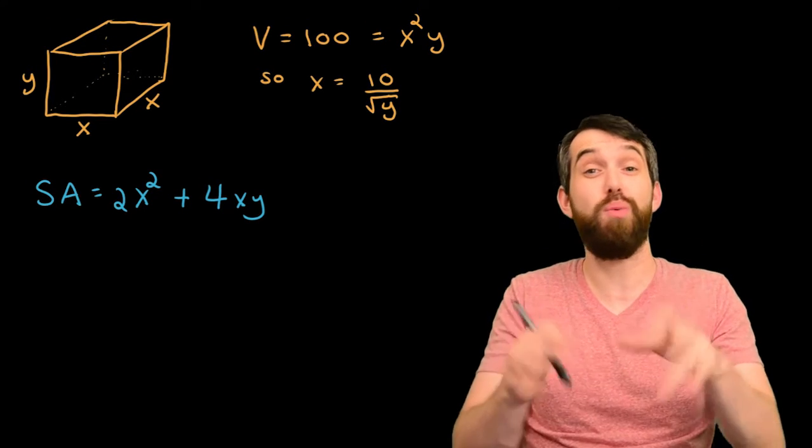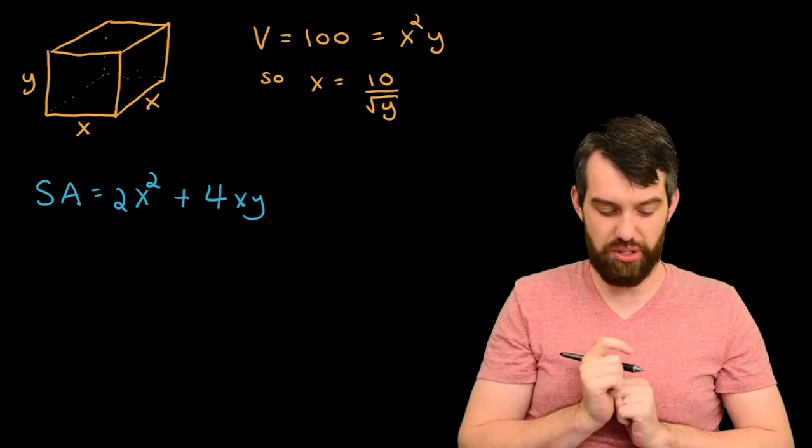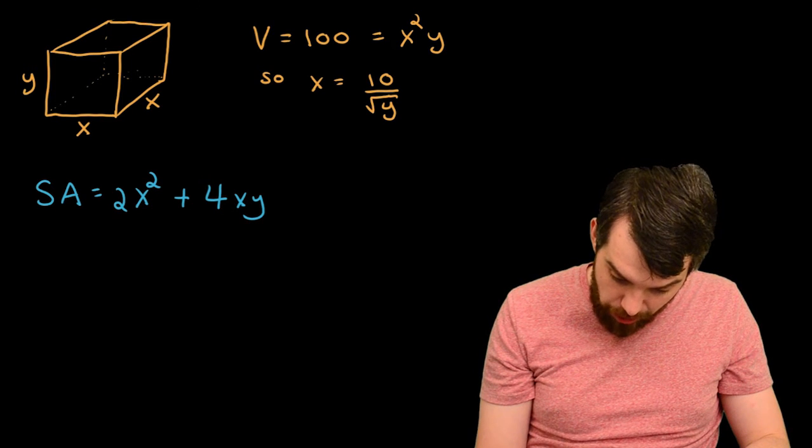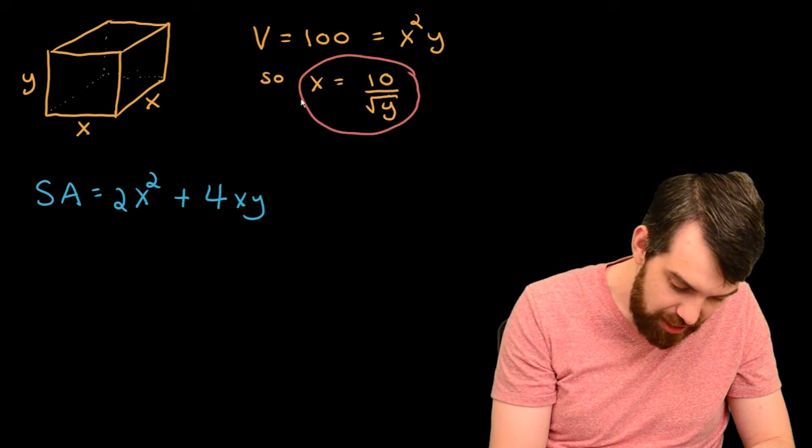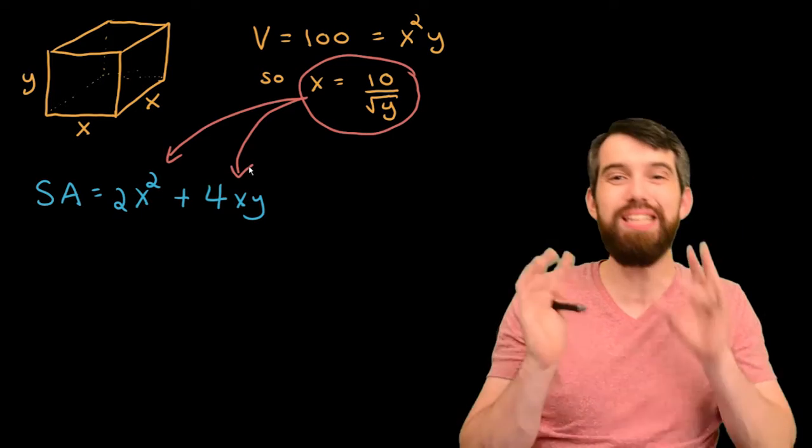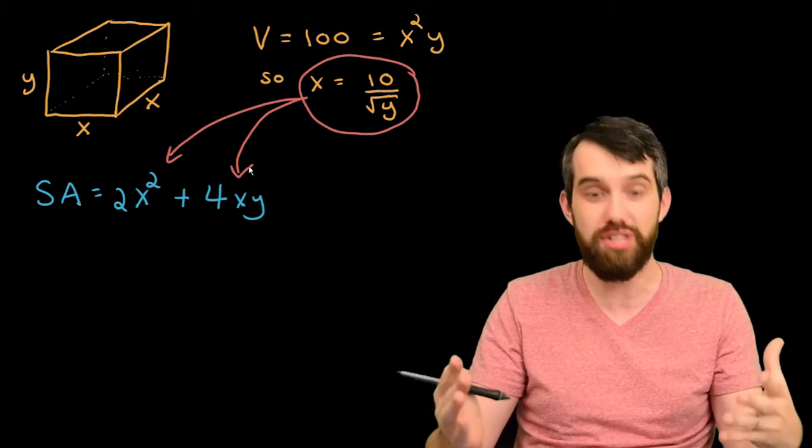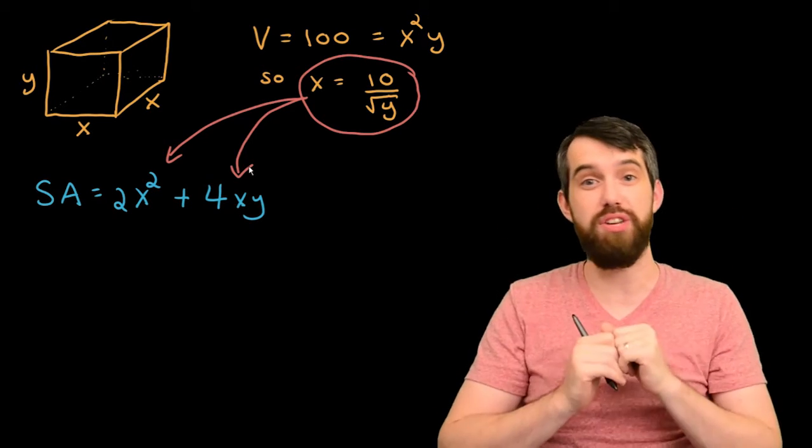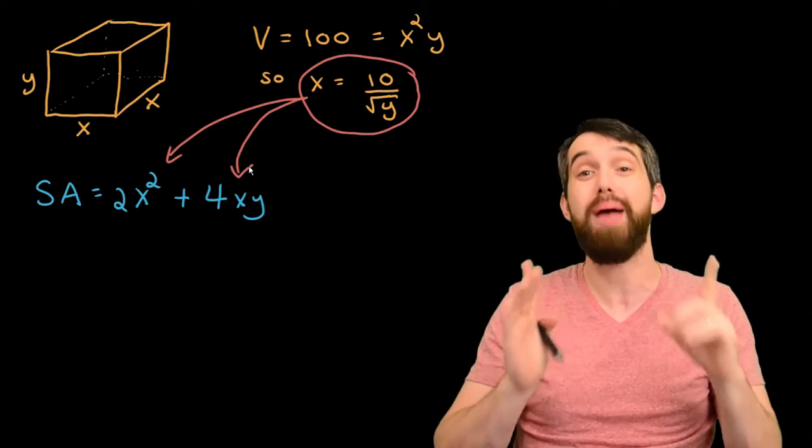Alright, moving right along. Now what I want to do is I want to take this formula from our constraint, this x, and I want to plug it in anywhere where I can see an x. And the reason is I want my surface area only in terms of the thing I'm interested in. I claimed I was interested in the height y, so that's what I'm going to do. If I was interested in the x, I would have said so, and I'd be substituting the y, but I'm interested in the height.